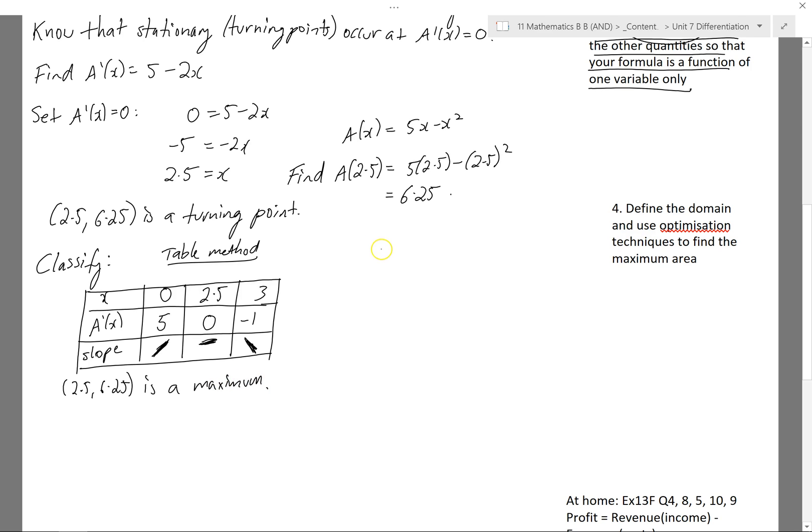Alternatively, I could use the second derivative test. So in the second derivative test, I'll take my derivative, I'll differentiate it again, so it leaves me with minus 2. And I'll sub in x equals 2.5. I'll see the A''(2.5). So if I sub in x into minus 2, still minus 2, regardless of the value of x. A negative value here, so this negative 2 which is negative, this implies that 2.5, 6.25 is a maximum.